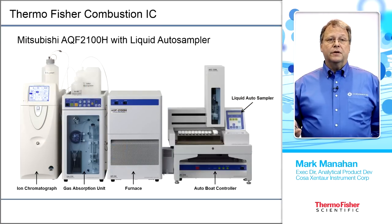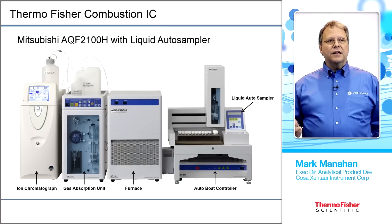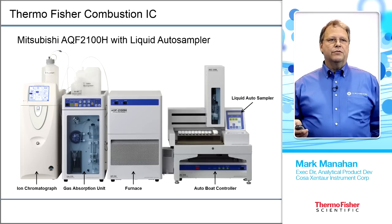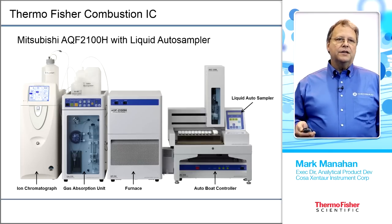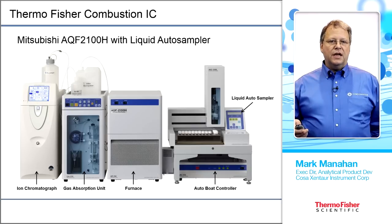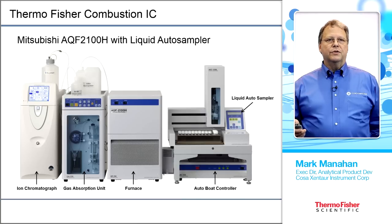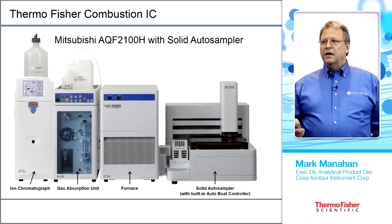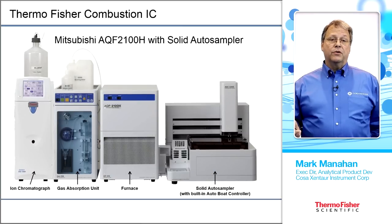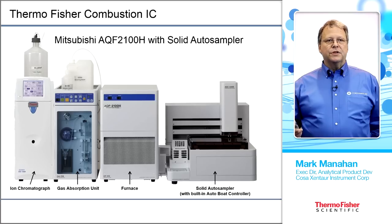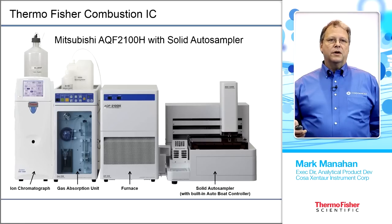This is an actual picture of a combustion ion chromatography system with the liquid autosampler on the right. Underneath that is the sample boat. In the middle is the AQF-2100 furnace. To the left is the GA-210 gas absorption module, and to the right is an ICS-2100 using auto-eluent generation, or reagent-free IC. The solid autosampler version has a 40-position solid autosampler where samples are weighed into boats, picked up, inserted into the furnace, burned, and the gas is caught and injected.